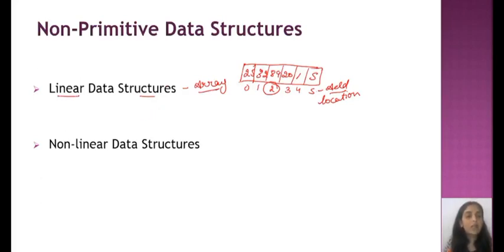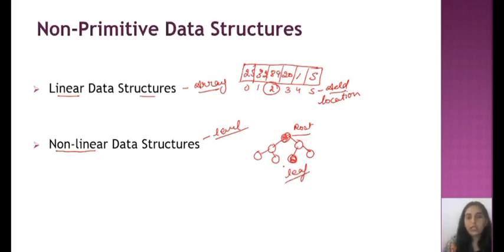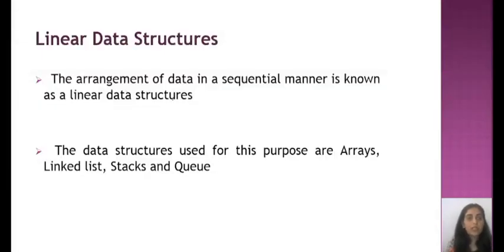In data structure, we have multiple types of linear data structures which we will discuss in detail in next videos. Linear data structure is the arrangement of data in a sequential manner. The data structures are arrays, linked list, stacks, and queues. All these types are very important. We will discuss each and every point in detail in some next video.